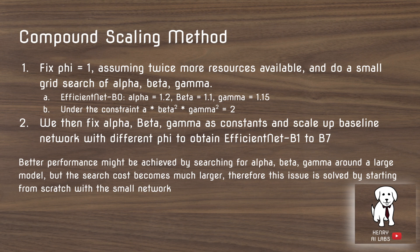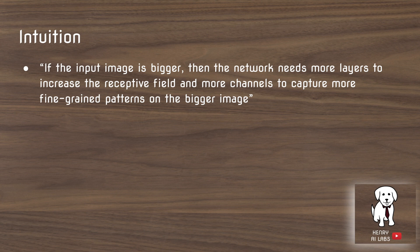They hint they would find better results if they searched for parameters around a larger model — for example, around the sixth iteration of scaling up — but that search cost would become larger, so it's better to just start from scratch with a small network. The intuition is that if the input image is bigger, the network needs more layers to increase the receptive field and more channels to capture more fine-grained patterns in the bigger image.